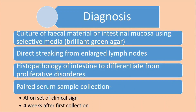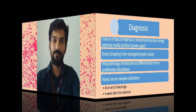For diagnosis, as usual for all enteric organisms, culture of fecal materials or intestinal mucosa using selective media is done. For Salmonella, brilliant green agar is one of the selective media. You can go for direct smearing from enlarged lymph nodes. Histopathology is done to differentiate from proliferative disorders — you have to differentiate whether it is a tumor or not. Another method is paired serum samples: first collected at the onset of clinical signs, then four weeks after the first collection, to measure antibody titers. In poultry, there are different methods, but that is not discussed here.